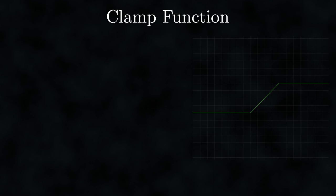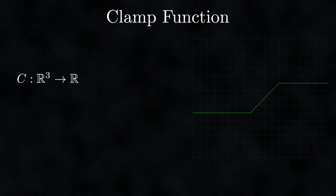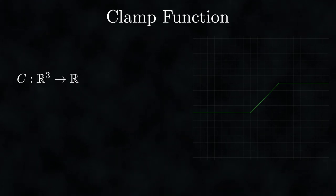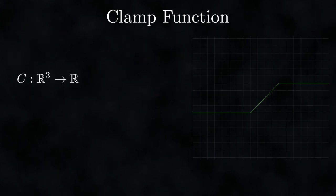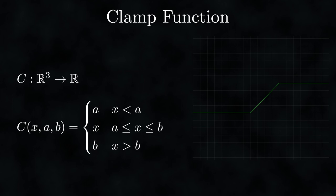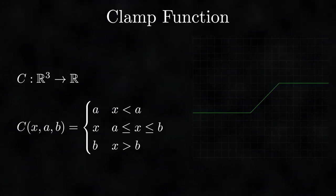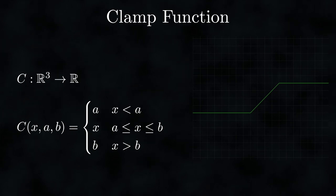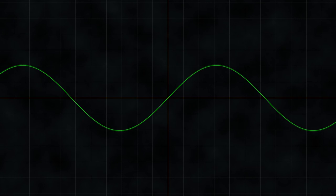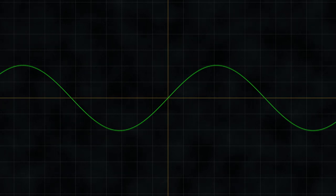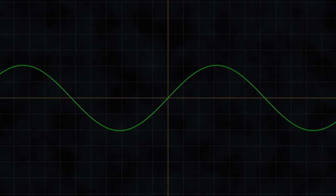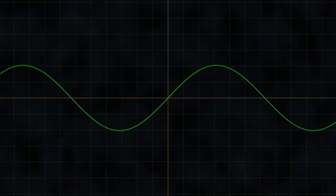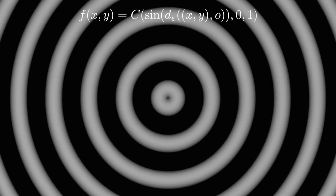Sometimes we need to limit the range of our functions. One way is the clamp function C, which takes three real numbers and outputs a single real number. Given input x and threshold values a and b: it returns a when x < a, returns x when a ≤ x ≤ b, and returns b when x > b. For instance, to use our distance and sine functions to generate a diffuse color map, the sine wave output lies in [−1, 1] while color values lie in [0, 1]. The clamp function limits the sine output to the range 0 to 1, which we can then use to drive color coordinates.